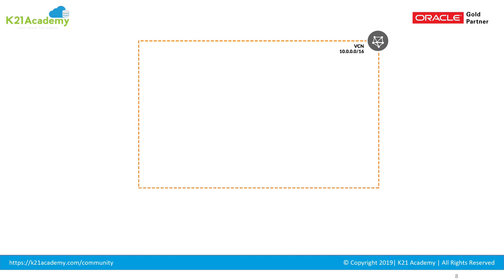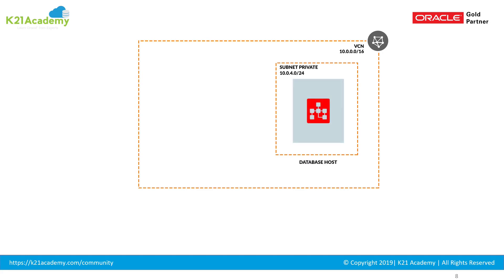When you do any deployment, the first thing you create is a virtual cloud network. With that VCN you define a CIDR — for example 10.0.0.0/16. Then we create a private subnet with CIDR 10.0.4.0/24, and within this private subnet we deploy the database. This follows the three-tier architecture model from on-premise, where your database tier goes on a very secure network, your application tier is on an application tier, and then you have a DMZ and a client tier. So in this private subnet we deploy a database on a Linux machine. Then we create a public subnet with CIDR 10.0.3.0/24.